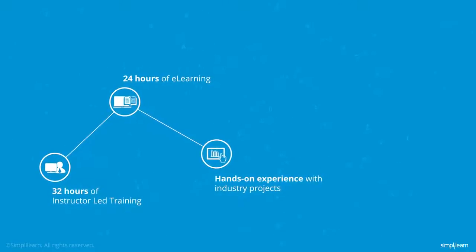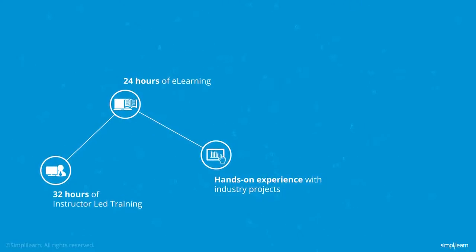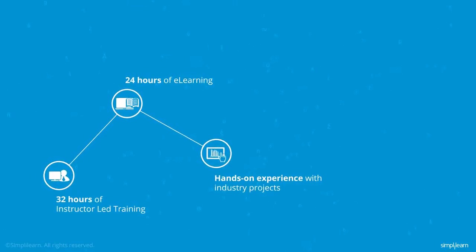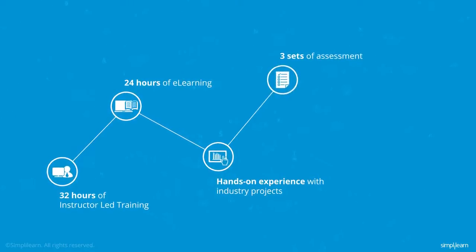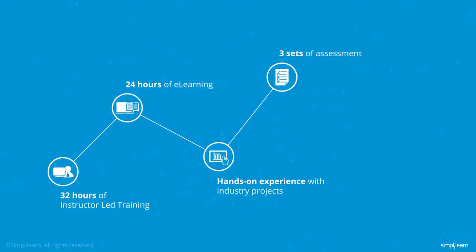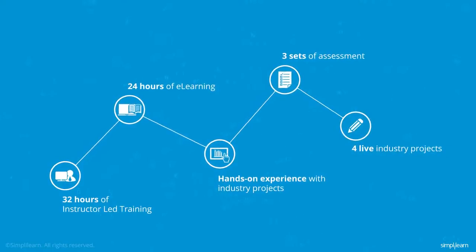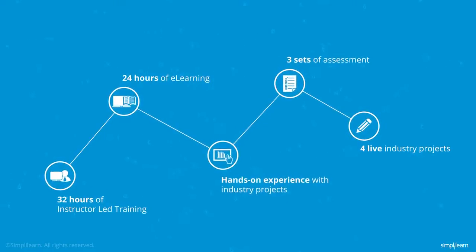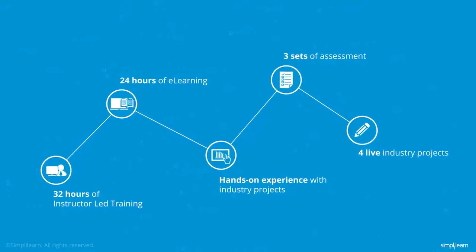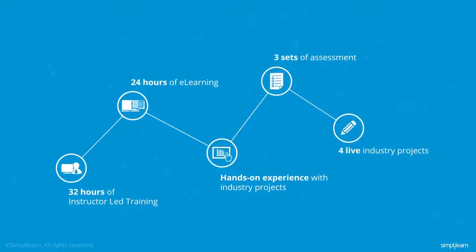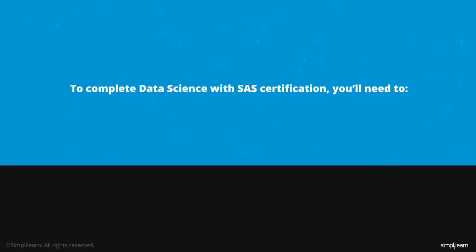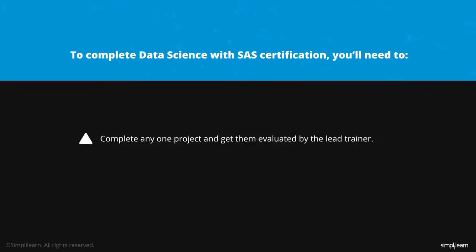You'll receive full support from the Simply Learn faculty throughout the course and mentoring for project work. You'll also be able to access three sets of assessment papers and four live industry projects on the SAS tool. On successful completion, you'll receive an experience certificate. To complete data science with SAS certification, you'll need to complete any one project and get them evaluated by the lead trainer.